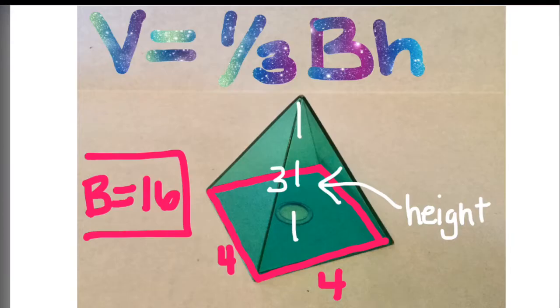So now that we have all of our numbers, we can fill it into the formula. Volume equals one third of big B, which is 16, times the height, which is 3.